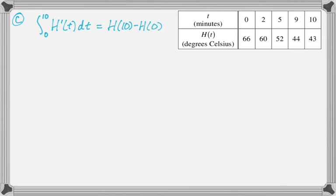Then we can read those off of the table. So that's going to be 43 minus 66. Calculator question, but you know, just do it.